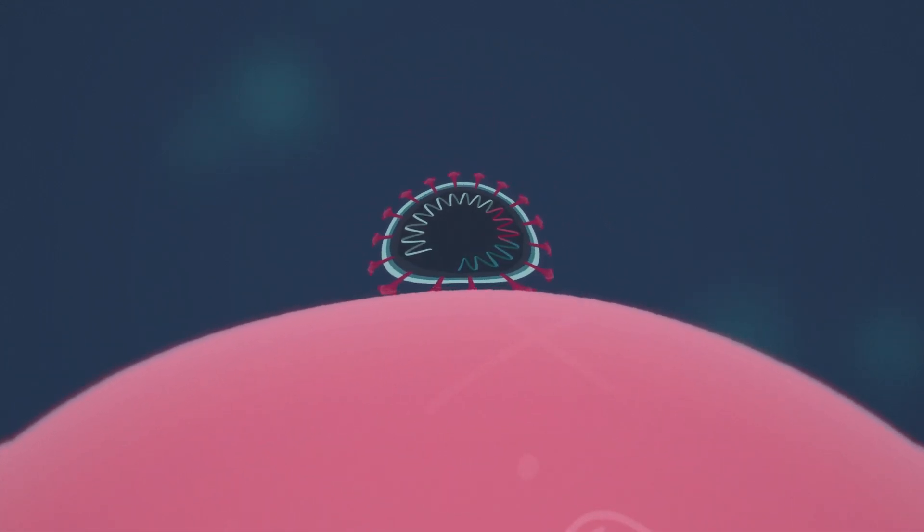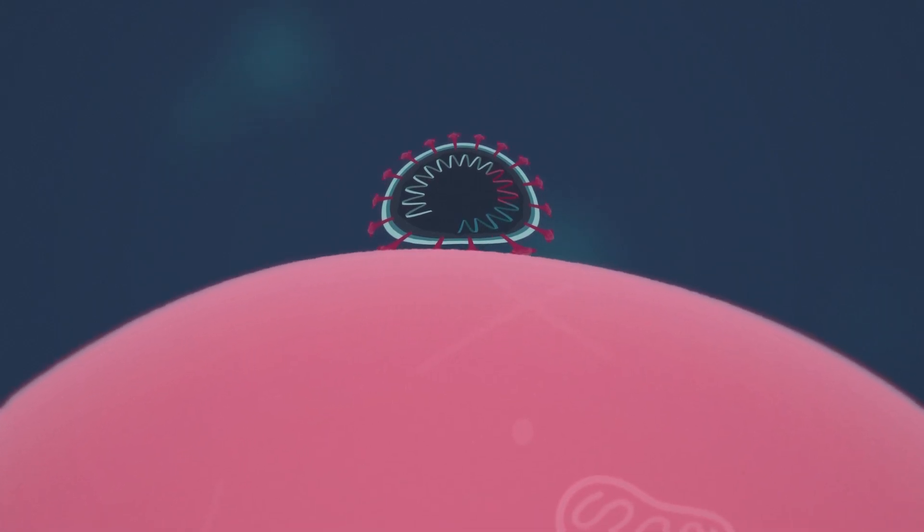When a virus lands on a human cell, the spike proteins allow the RNA in the virus to enter the human cell.